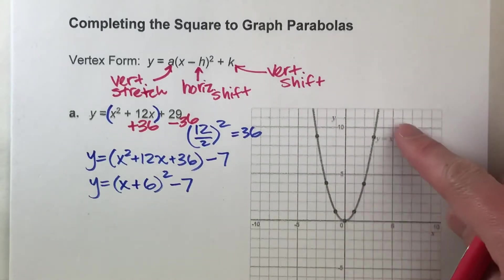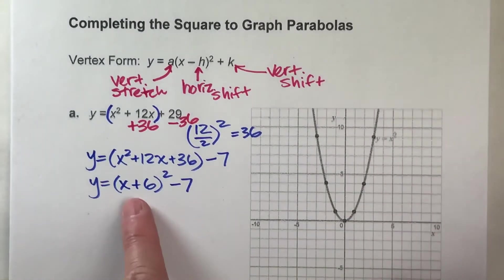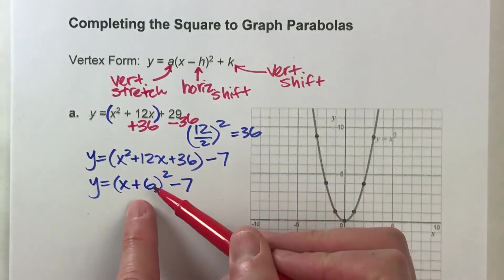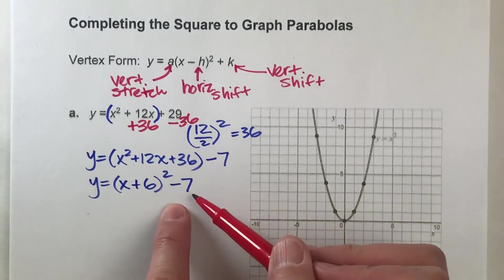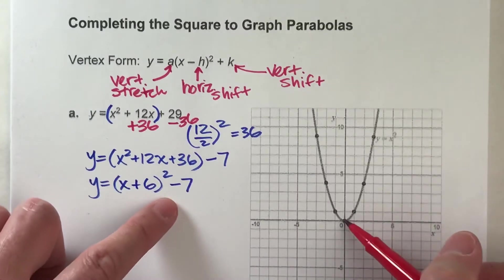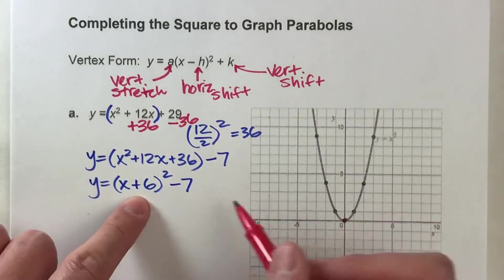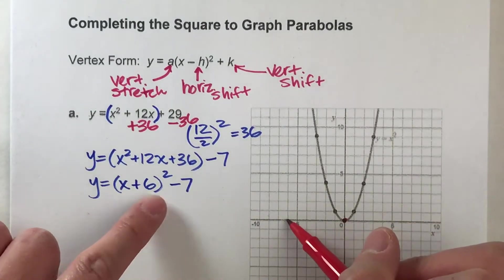So on this graph here, I have the graph of y equals x squared. So y equals x plus 6 squared minus 7 would be shifted to the left 6 and down 7. So I'm going to do the vertex here. Here's the vertex here. I'm going to go 6 left and down 7. There's my new vertex down there.